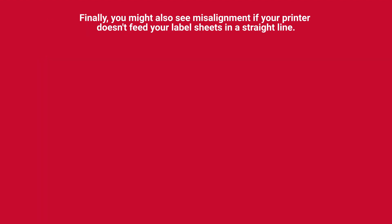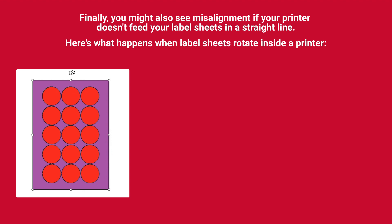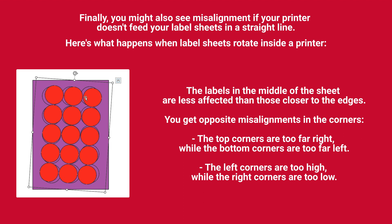Finally, you might also see misalignment if your printer doesn't feed your label sheets in a straight line. Here's what happens when label sheets rotate inside a printer: the labels in the middle of the sheet are less affected than those closer to the edges. You get opposite misalignments in the corners — the top corners are too far right, while the bottom corners are too far left. The left corners are too high, while the right corners are too low.